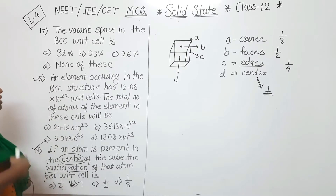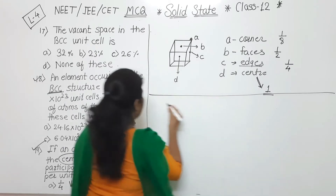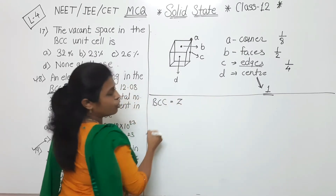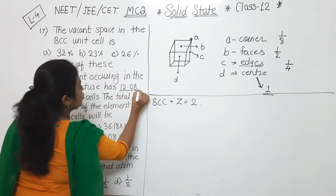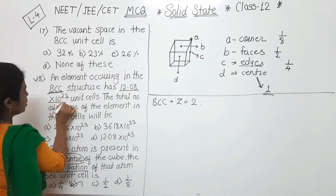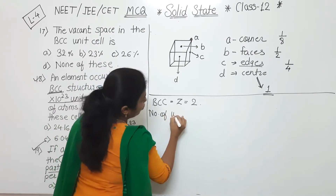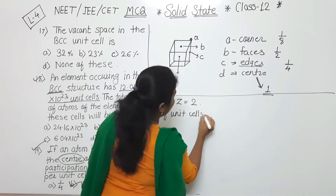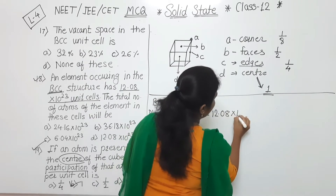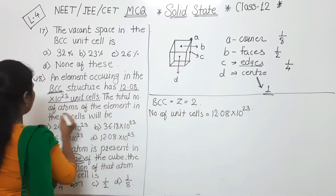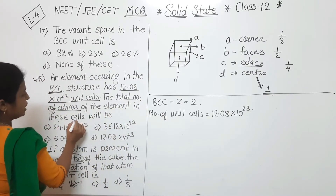Next one: an atom occurring in the BCC structure — BCC means number of atoms Z is equal to 2. The structure has 12.08 into 10 raised to 23 unit cells. So the number of unit cells is 12.08 × 10²³. The total number of atoms of the element in this cell will be?